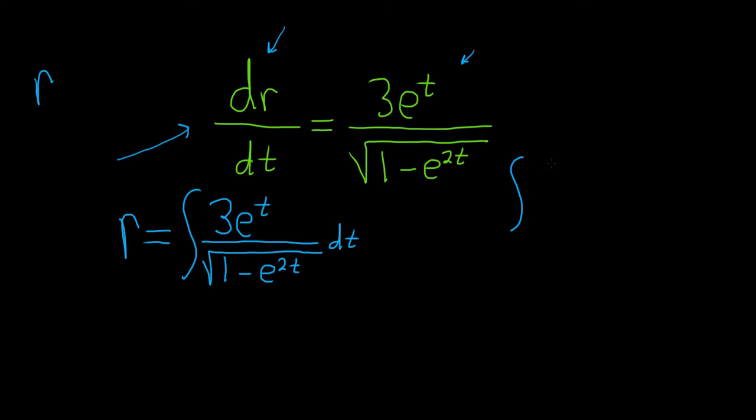So the formula is if you have 1 over the square root of a squared minus x squared dx, this is equal to the arc sine of x over a, plus c.